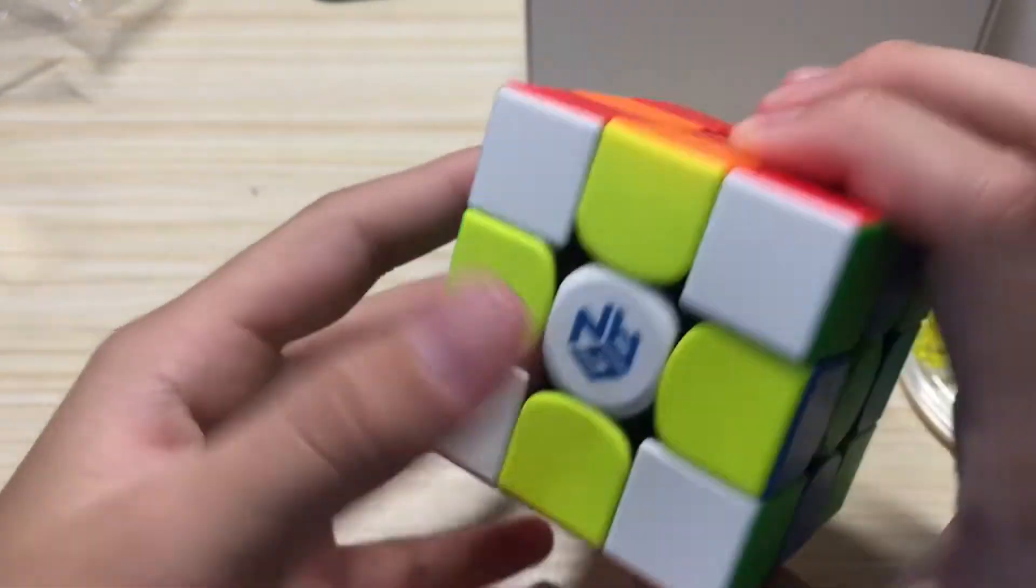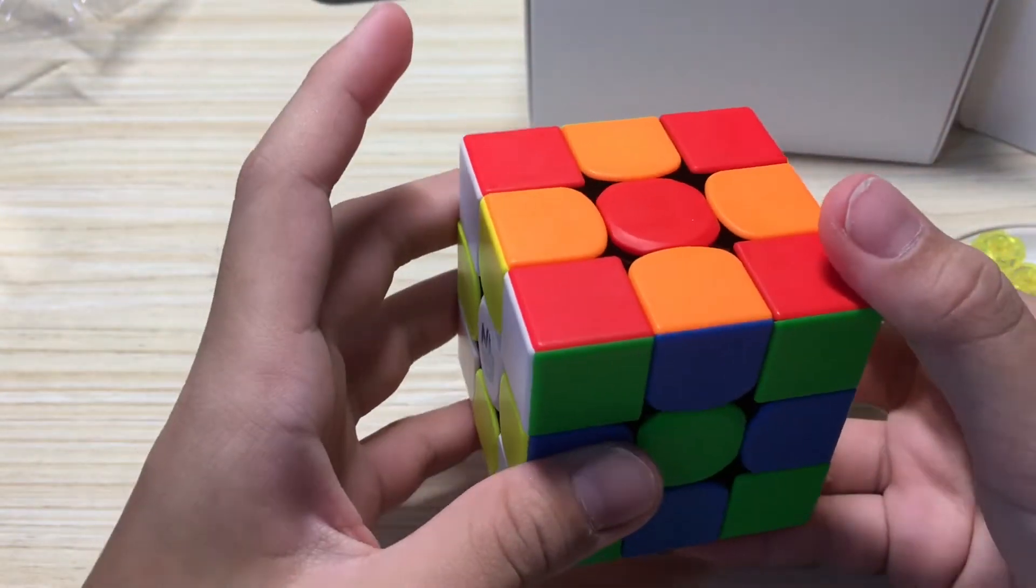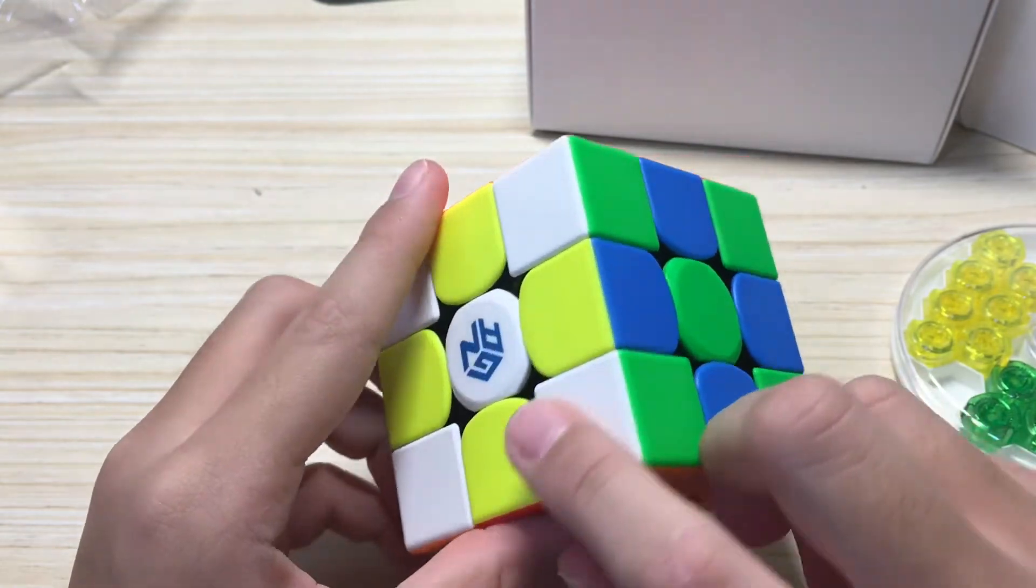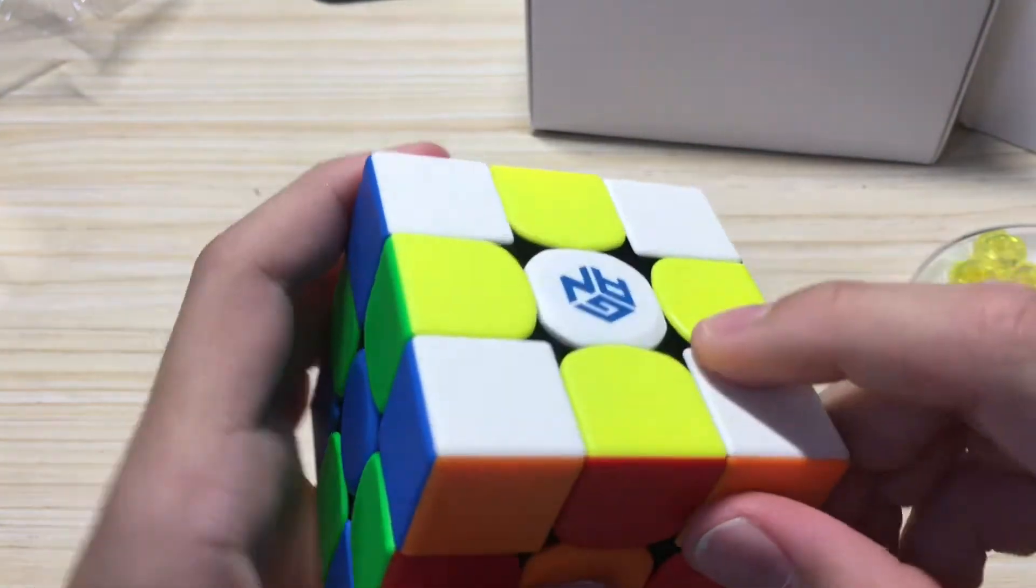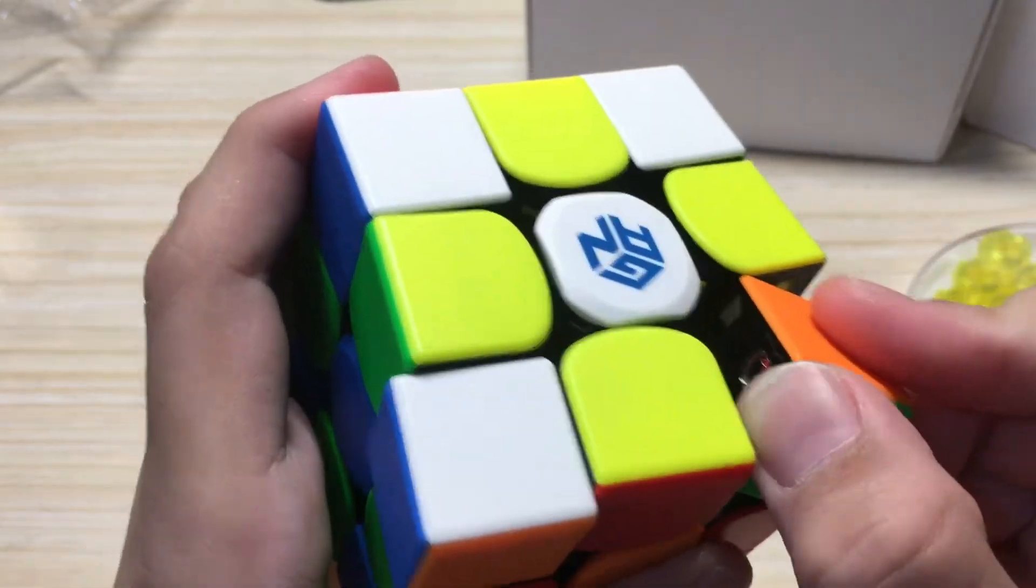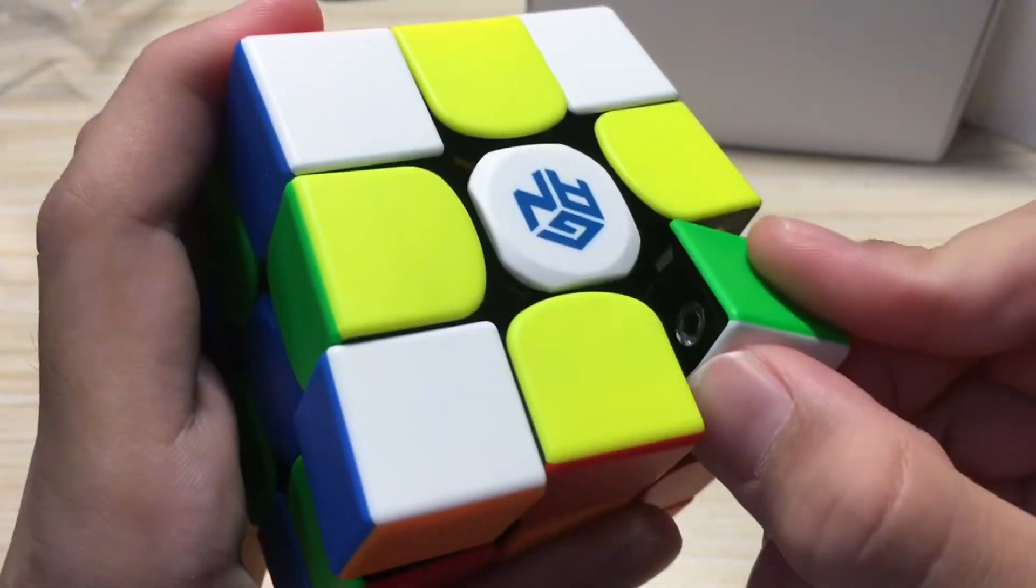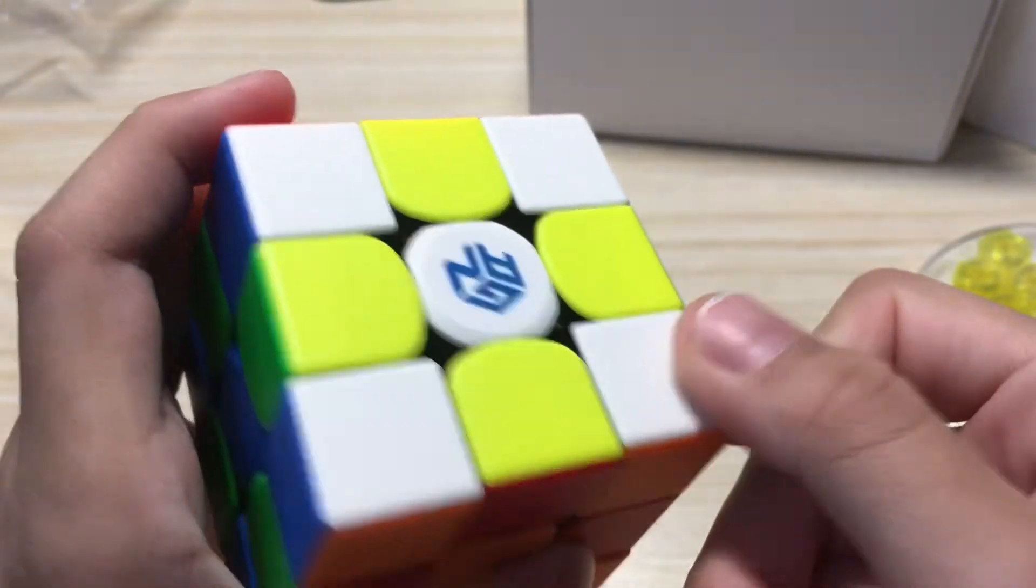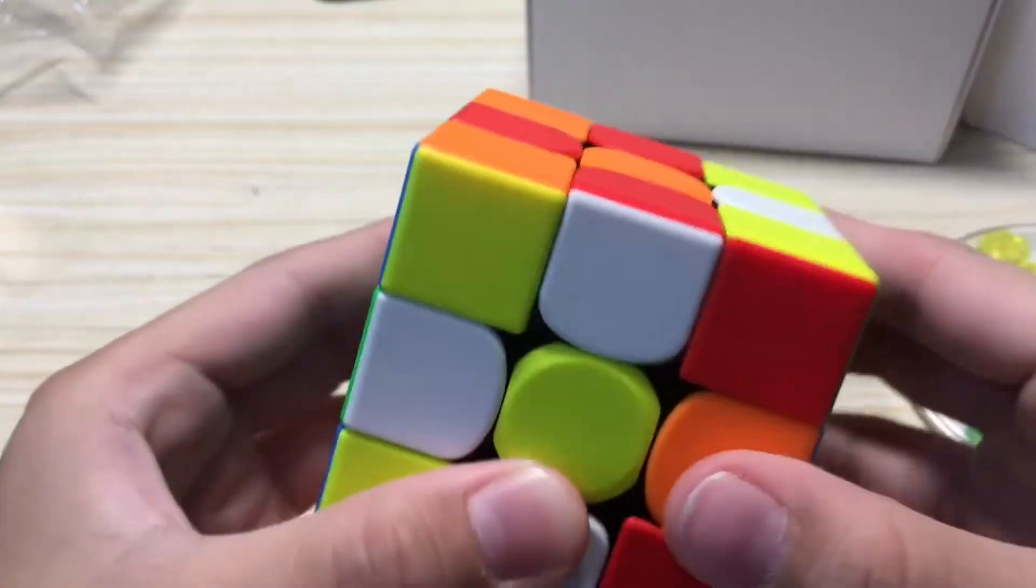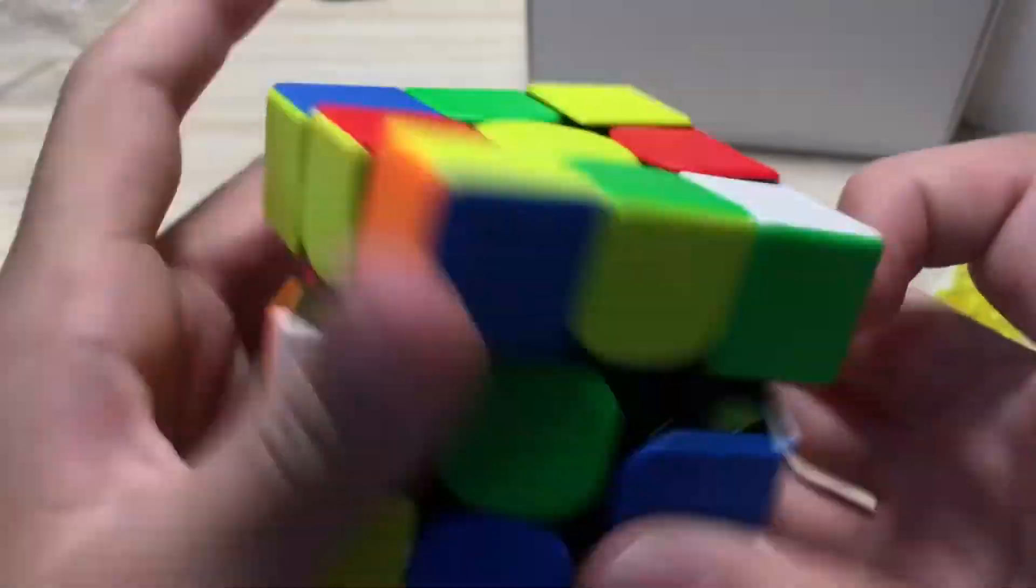I guess this cube, it's very smooth. We also can do this. This is very smooth. Let's scramble it up.